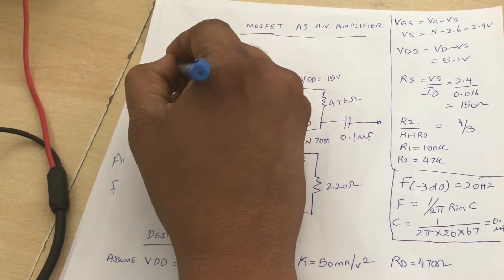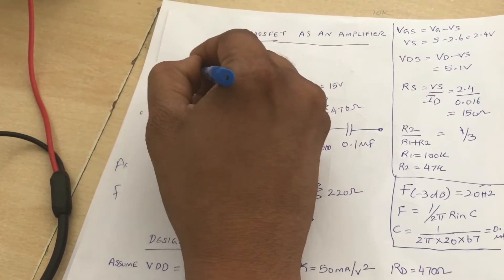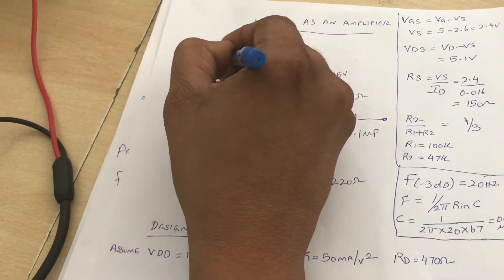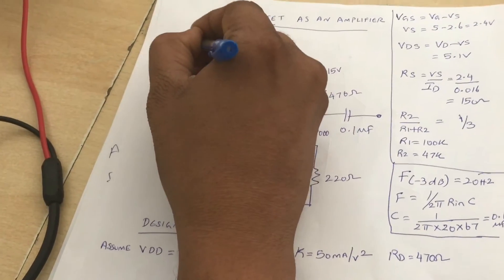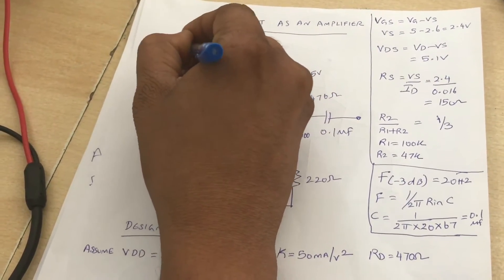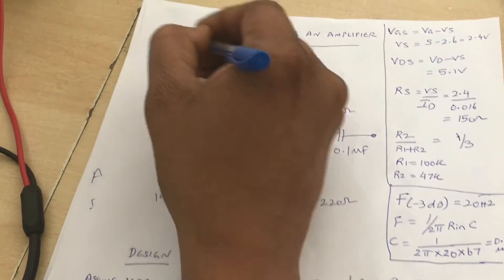If you see the structure of an n-channel MOSFET, we have a p-type semiconductor and we have two n+ regions diffused across, and we have an SiO2 layer. On top of it we have a metal gate, so we take three terminals: gate, source, and drain.